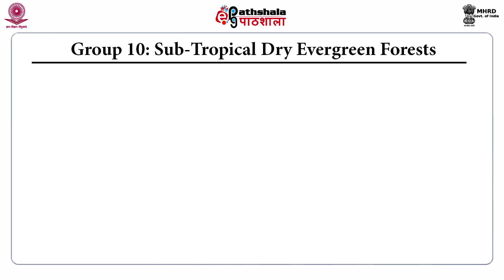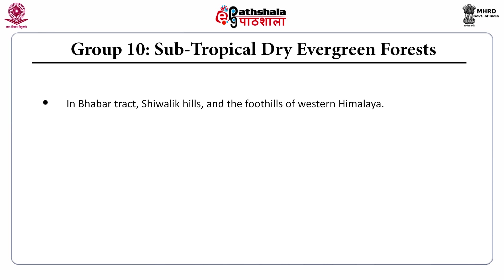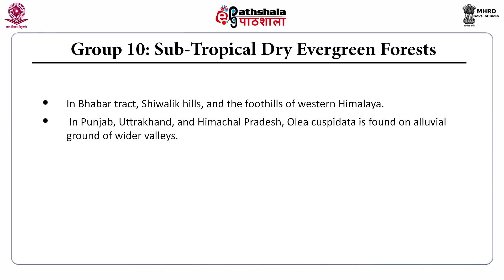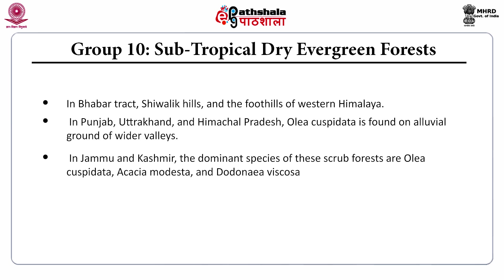Group 10, the subtropical dry evergreen forests, occur in the Bhabhar tract, the Shivalik hills, and the foothills of the Western Himalaya in Punjab, Uttarakhand, and Himachal Pradesh. Olea cuspidata is found on alluvial ground in wider valleys. In Jammu and Kashmir, the dominant species of these scrub forests are Olea cuspidata, Acacia modesta, and Dodonaea viscosa.